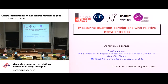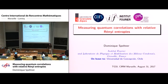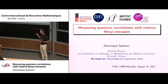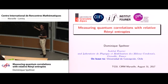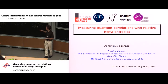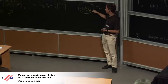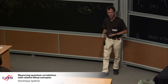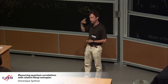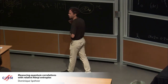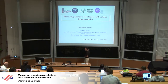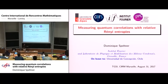Hello, everybody. My talk will be exactly about this problem that was emphasized by Carol — how can you measure entanglement by taking this idea of a distance to the set of separable states. I will also talk about another kind of quantum correlation called quantum discord, but with the same idea.